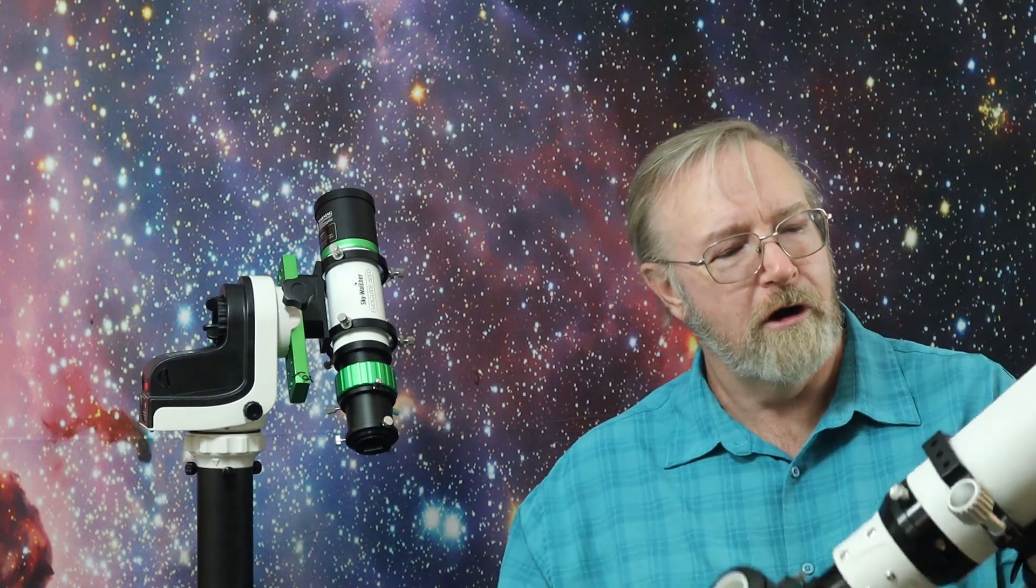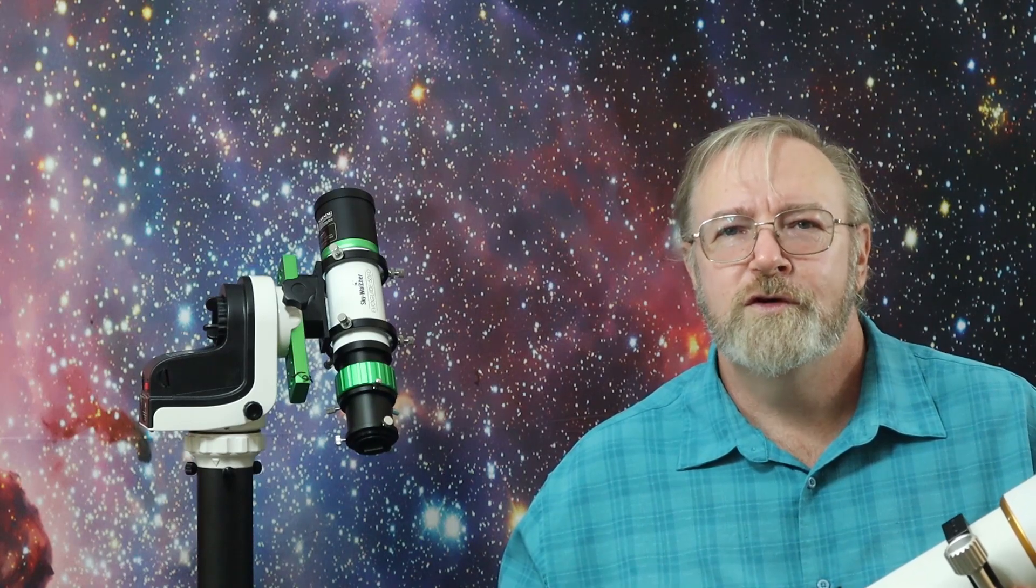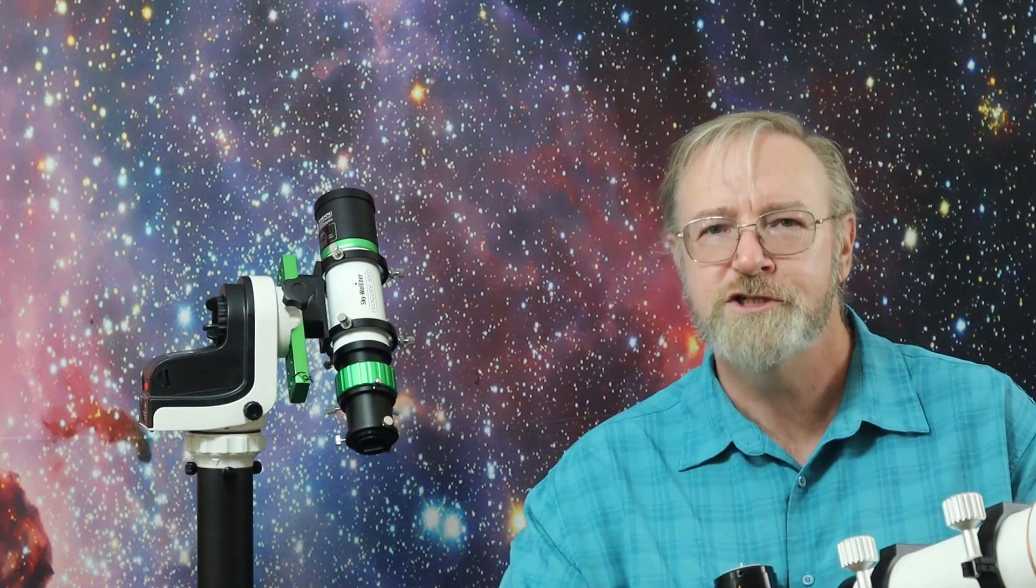And I've seen the SV503 as low as $330 pre-pandemic and a high of about $450. So the reason for choosing this scope was primarily budget. The specs are it's an 80mm, 560mm focal length, making it an F7. It has synthetic FPL51 glass and SMC coatings. It's an aluminum tube, 2 inch Crayford focuser, also has a 10 to 1 reduction on it.